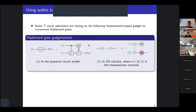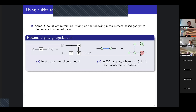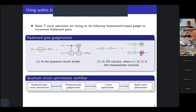After that, we will see a much more general approach for optimizing the number of T gates with the number of qubits in quantum circuits. The Hadamard gate can be a problem when we are optimizing the number of T gates. So in order to get rid of the Hadamard gate, some T-count optimizers are using this measurement-based gadget in which a Hadamard gate is replaced by a controlled-Z gate with some new qubit.